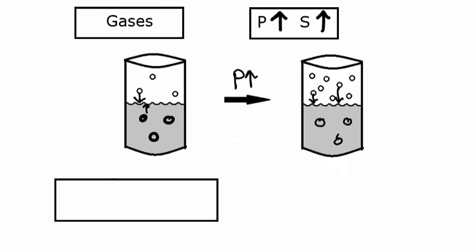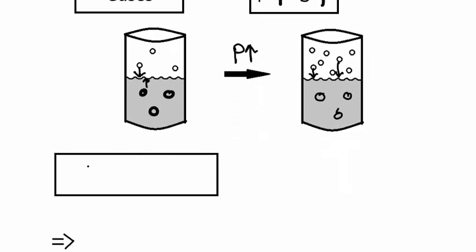We represent this with an equation that goes like this. The solubility of a gas is equal to a constant times the pressure of the gas above it. This is known as Henry's Law.